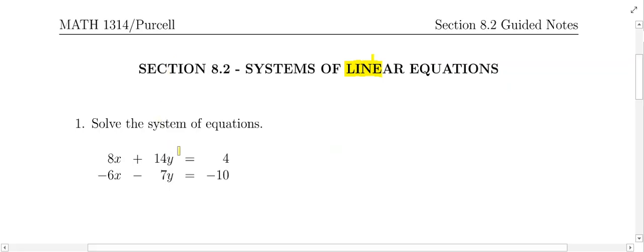Here the y is easier to eliminate. If you look at the y pieces for both equations, you have a positive 14y compared to a negative 7y. So what we want is we want the y's to go away. I have a 14y in the first equation.